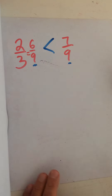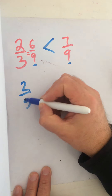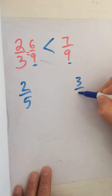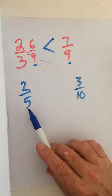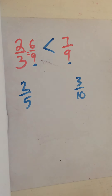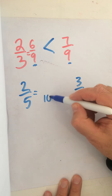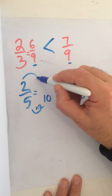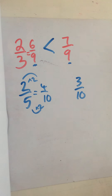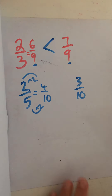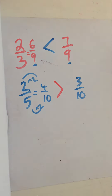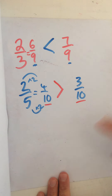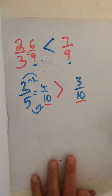Another example: two fifths and three tenths. The lowest common multiple of five and ten is ten. I turn two fifths into tenths by multiplying top and bottom by two, giving four tenths. Now comparing four tenths with three tenths, I've proven that two fifths is bigger than three tenths by using an equivalent fraction and putting them in the same denominator.